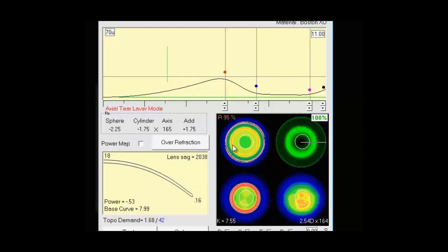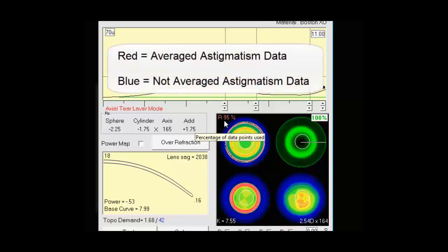Moving over to our quad view display. The upper left as R 95%. The 95% refers to the amount of data points that are used from the topography. The R represents that this is a right contact lens. And you'll notice that it is red. When it's red it means we were prompted to average astigmatism data from the imported topography. And we selected yes to average data. If we selected no to averaging the data that would be blue. And we'll get into that in a little more detail later.